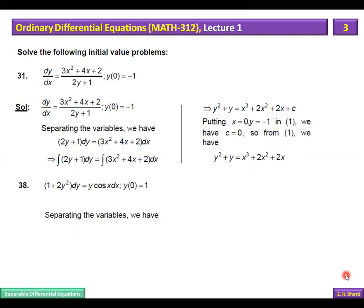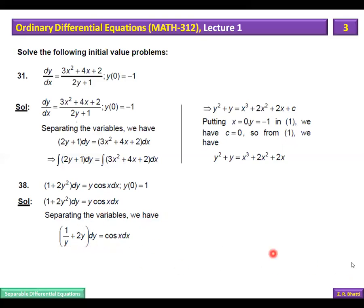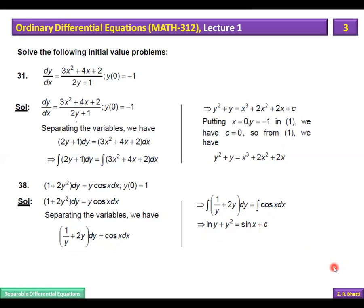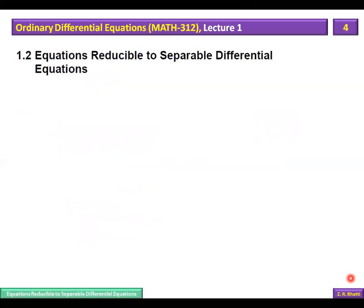Next question: separating the variables gives 1/(y + 2y) dy = cos(x) dx. Integrating: the integration of 1/y gives log y, and the 2 cancels. The integration of cos(x) gives sin(x) plus constant of integration C. We then put in the initial condition, and using the previous calculation we can determine C and substitute it back to get the particular solution.